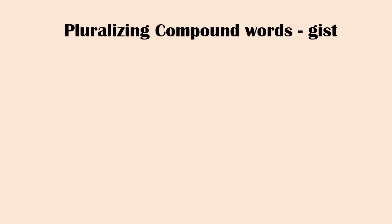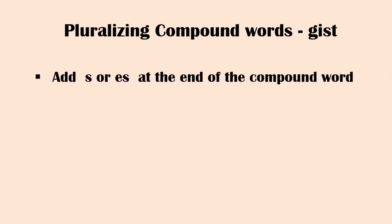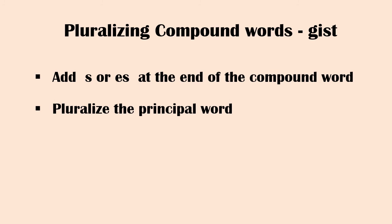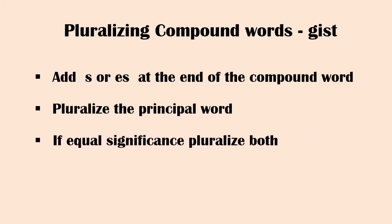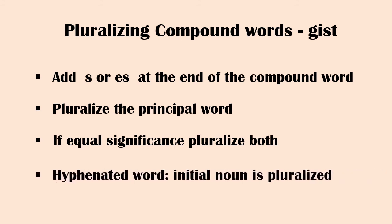Let's consolidate what we have learnt. First, add 's' or 'es' at the end of the compound word if there are two nouns — the second noun is made plural. Second, sometimes the principal word is pluralized. Third, if the words are of equal significance, then both words are pluralized. Fourth, in hyphenated words with a preposition, the initial noun is pluralized.